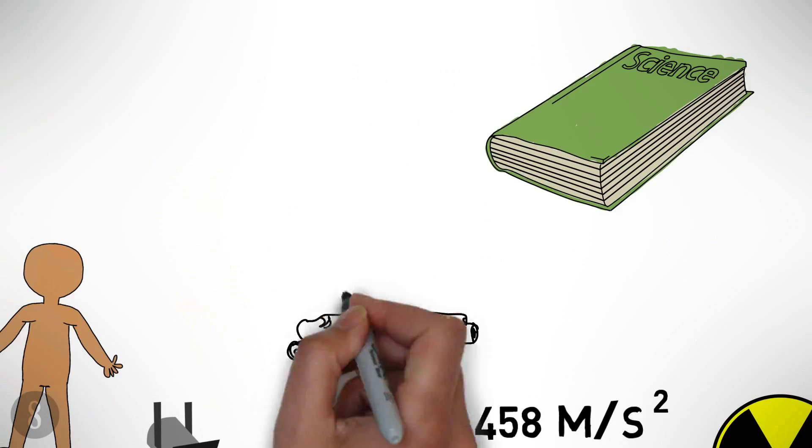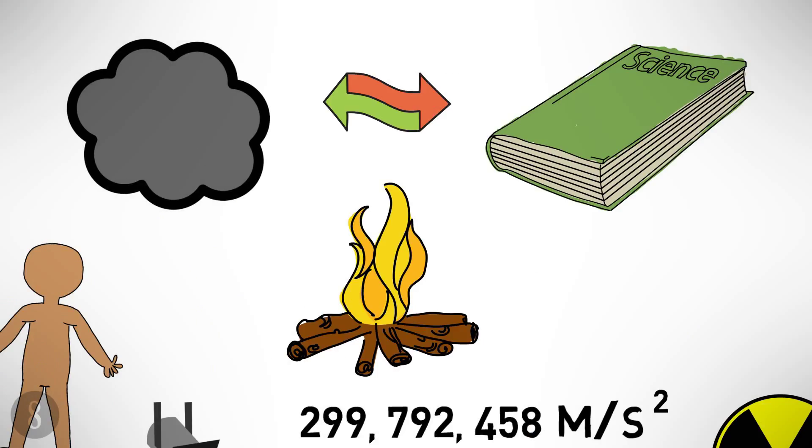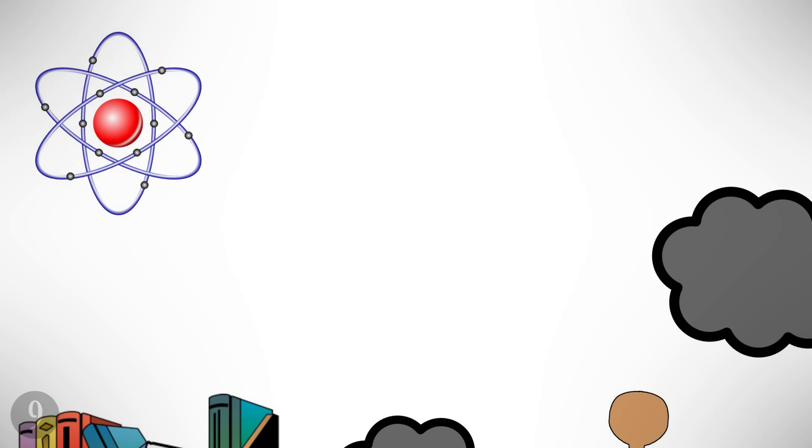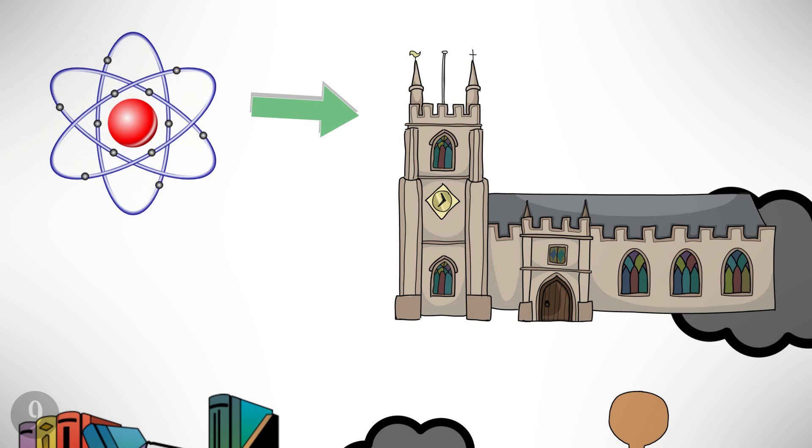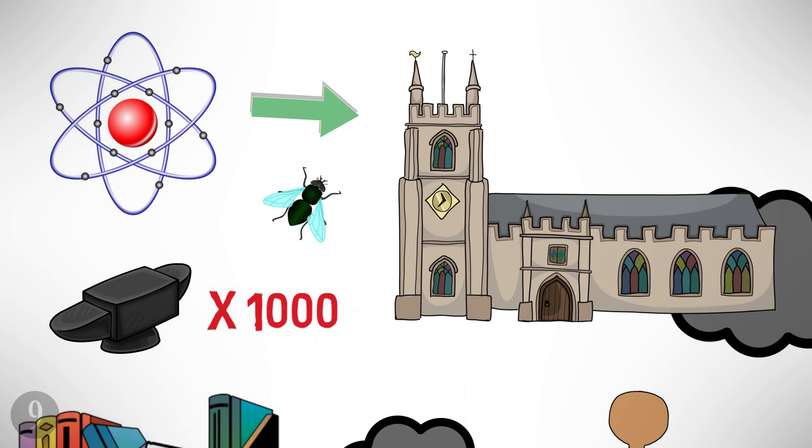Number eight: if you burned a book, its matter would be changed to ash and smoke, but the net amount of stuff in the universe would remain the same. Number nine: if an atom were expanded to the size of a cathedral, the nucleus would be only about the size of a fly, but a fly many thousands of times heavier than the cathedral.